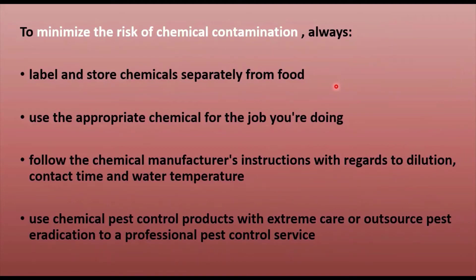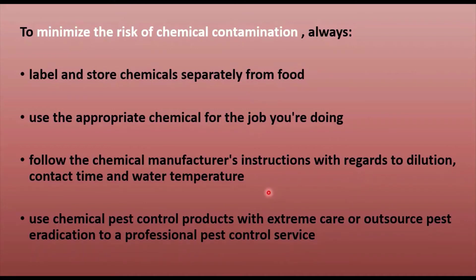To minimize the risk of chemical contamination: always label and store chemicals separately from food; use the appropriate chemical for the job; follow the chemical manufacturer's instructions regarding dilution, contact time, and water temperature; and use chemical pest control products with extreme care, or refer pest eradication to a professional pest control service. Following these rules will minimize the risk of chemical contamination.